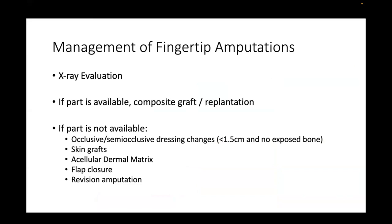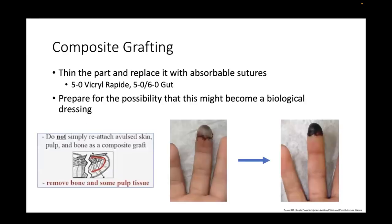If the part's not available, options include occlusive or semi-occlusive dressings, skin grafts (though not necessarily recommended), acellular dermal matrix, flap closure, and revision amputation. Composite grafting includes thinning the part and replacing it with absorbable sutures — my favorites are 5-0 Vicryl Rapide and 5-0 or 6-0 Plain Gut. Do not simply reattach the avulsed skin, pulp, and bone as a composite graft. It's important to remove the bone and some pulp tissue, and to prepare the family for the possibility that this may become a biological dressing.